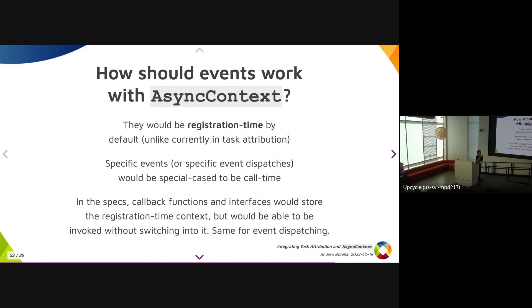And how this would work in the specs would be that you would have callback function interfaces, which are the web IDL representation of function objects in JavaScript. When you're passing a callback to something that takes a callback function interface, that would store the registration time context as part of the web IDL type. But when invoking it, you would be able to switch whether you would use that registration time snapshot or whether not to switch into anything and use the call time. And that would work the same way for event distribution.